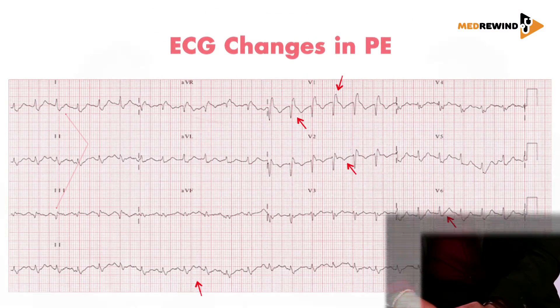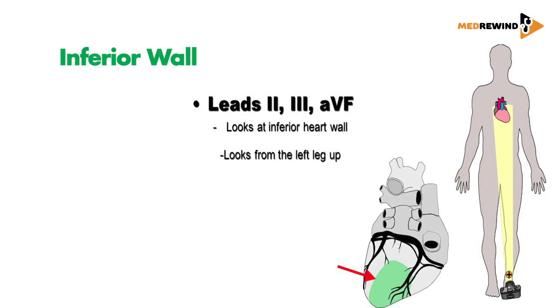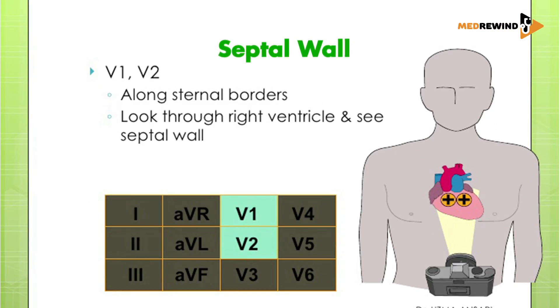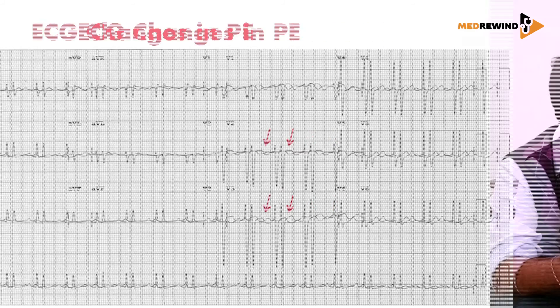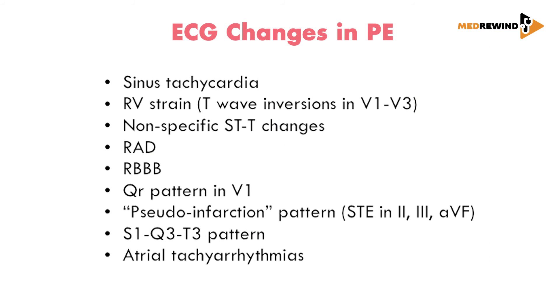When we do an ECG, pulmonary embolism can cause many changes. A pseudo-infarction pattern can be seen, manifesting as apparent inferior wall MI. The most common ECG finding in PE is simultaneous T-wave inversion in inferior leads (II, III, aVF) and septal leads (V1, V2, ±V3). If this is acute in onset, it is almost always pulmonary embolism — prioritize investigating for PE over acute coronary syndrome. Other findings include sinus tachycardia, non-specific ST-T changes, right bundle branch block, right ventricular hypertrophy features, and right axis deviation.